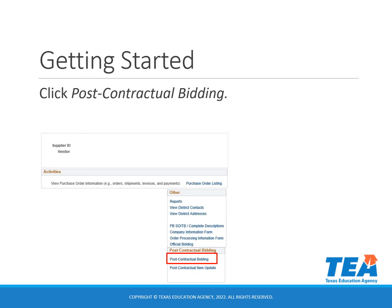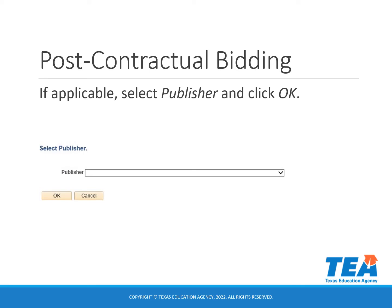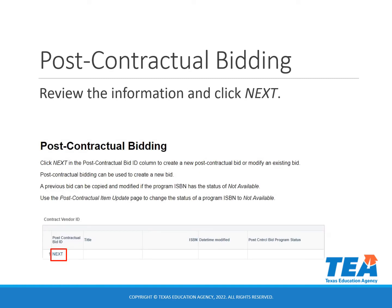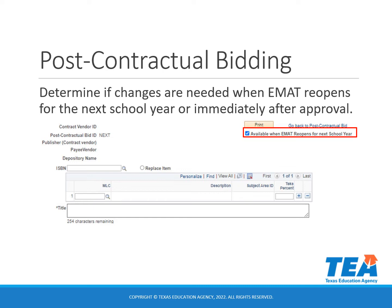First, you will start by clicking the post-contractual bidding link from your EMAT start page, then select the publisher from the drop-down menu and click OK. You will review the information at the top of the EMAT page and click Next to create your first post-contractual bid. When the page opens, please review the instructions at the top carefully before beginning. Then you will need to determine if the changes are needed when EMAT reopens for the next school year or immediately after approval. The default box will be checked for available when EMAT reopens for the new school year, so if you need the changes immediately after approval, you will need to uncheck that box.